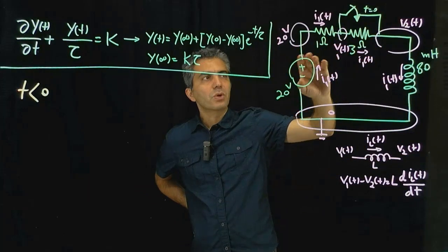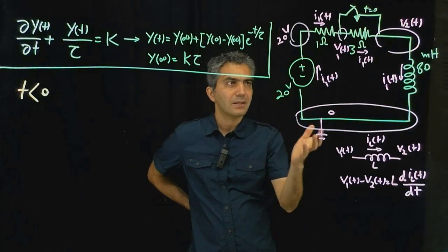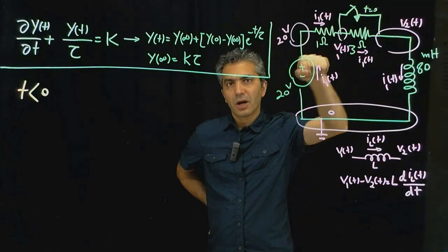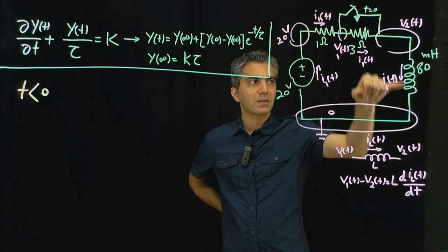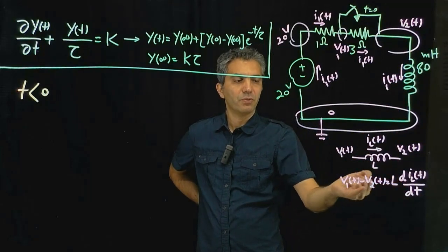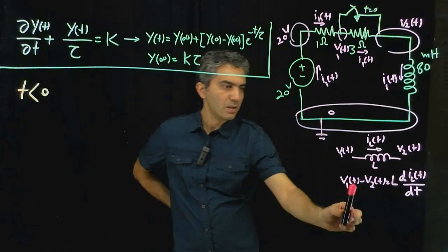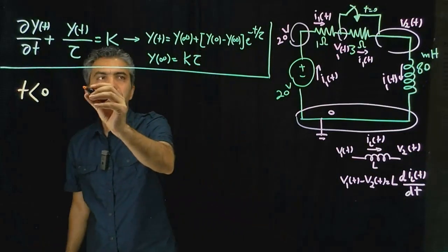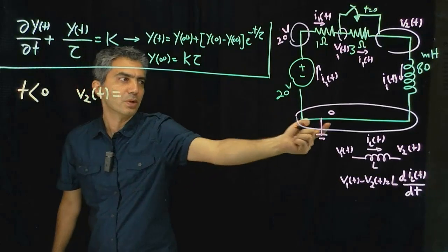Right before the switch, we can assume all currents and voltages are constant. Looking at the inductor equation: if the current is constant, its derivative is zero, which means the voltage across the inductor is actually zero. So V2(t) right before the switch equals zero. This completely simplifies the circuit — the inductor behaves like a ground, and we now have simply a voltage source applied across two resistors in series.